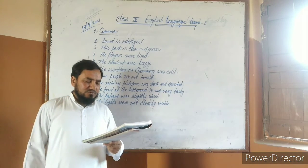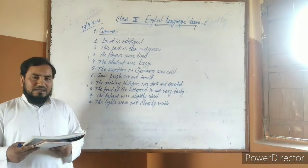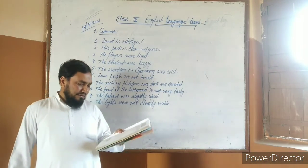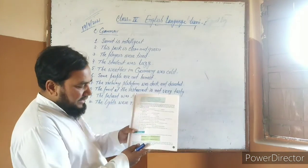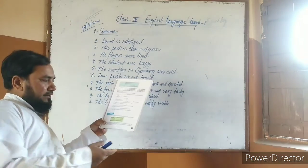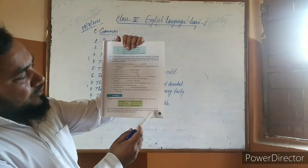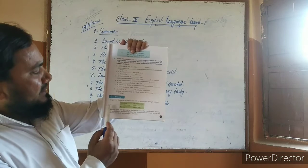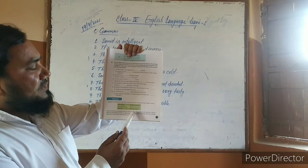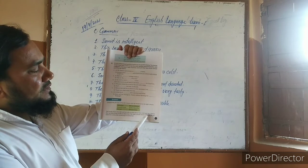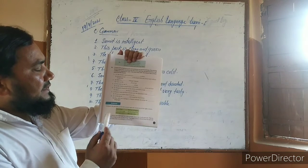These words — beautiful and hot — tell us more about boy, truth, and sun. That is, they are describing words, or adjectives. The right column shows how we can use adjectives to describe something in a sentence.